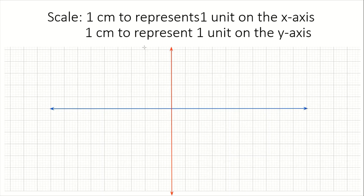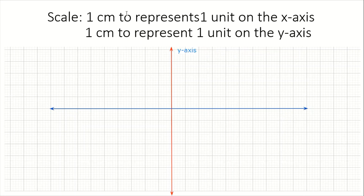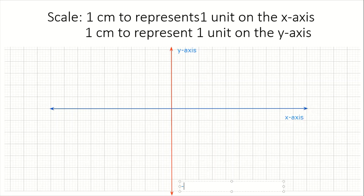Now the next thing I need to do is label the axes. This is going to be my y-axis, this is going to be my x-axis, this will be my negative y-axis, and over here will be my negative x-axis.